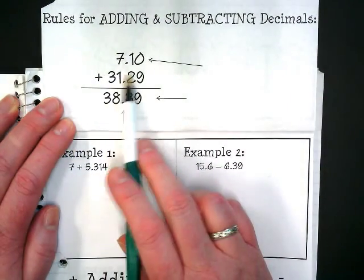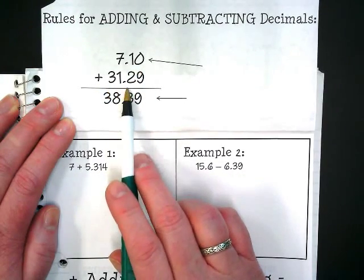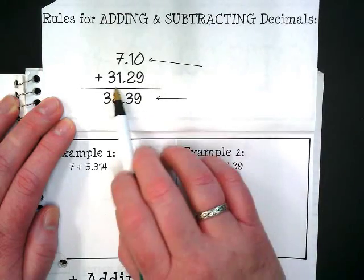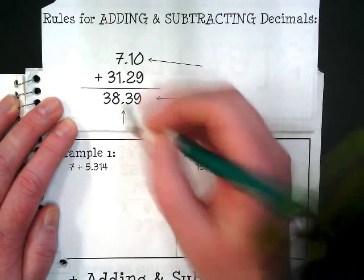If we have 7.10 or 7 tenths plus 31 and 0.29, which is also pronounced 31 and 29 hundredths, we're going to simply add them by lining them up with the decimal.